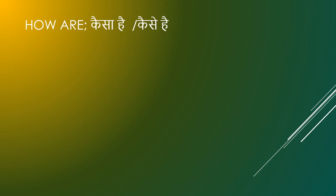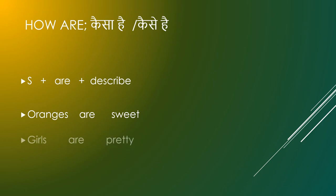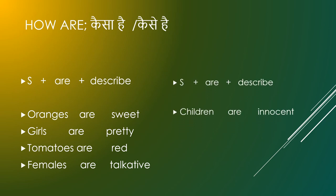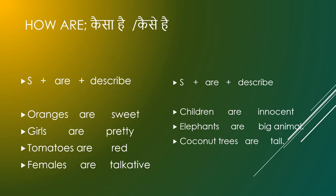How are — कैसे हैं? Oranges are sweet — संत्रे मीठे हैं. Girls are pretty. Tomatoes are red. Females are talkative. Children are innocent. Elephants are big animals. Coconut trees are tall. Roses are beautiful — गुलाब सुन्दर हैं.